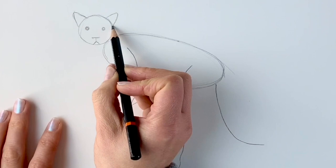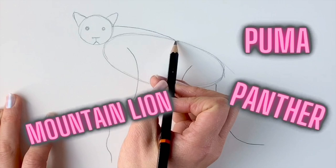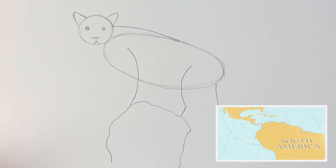So cougars, they've got so many names—they're known as mountain lions, pumas, or panthers, and they inhabit the Americas from Canada to South America. And then last but not least at this stage, we're just drawing a little line from this circle to the oval shape there.